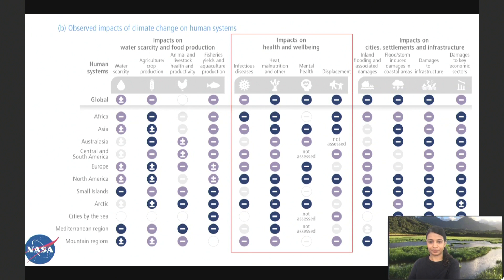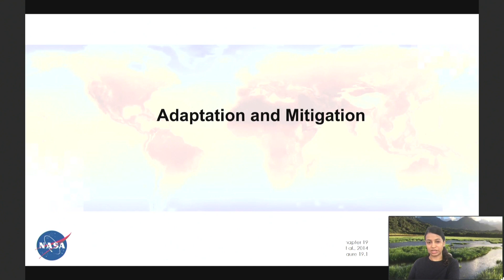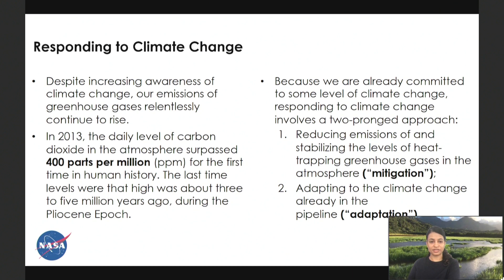Despite increasing awareness of climate change, our emissions of greenhouse gases relentlessly continue to rise. Our response to climate change needs a two-pronged approach: reducing emissions and stabilizing the levels of heat-trapping greenhouse gases — which we call mitigation — and adapting to climate change, which we call adaptation.